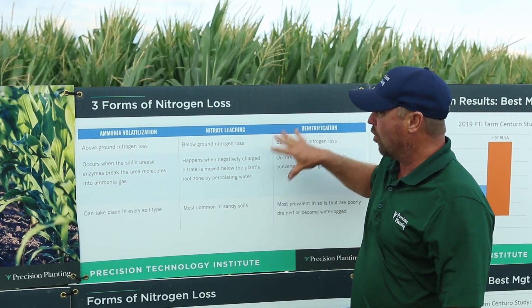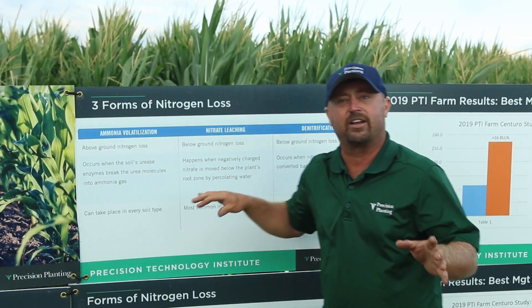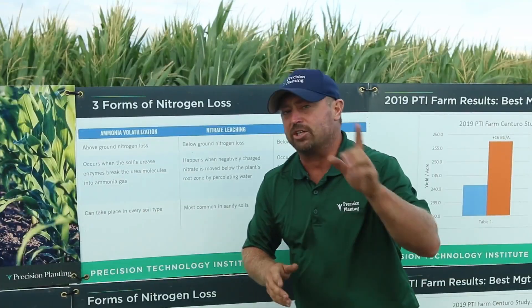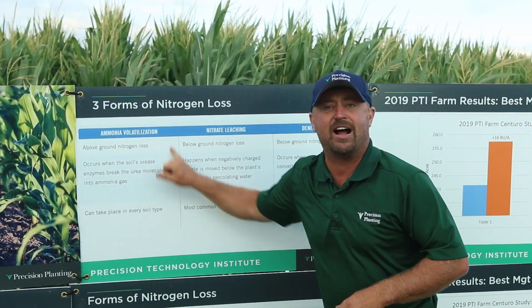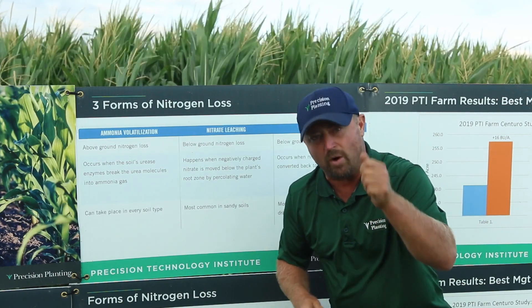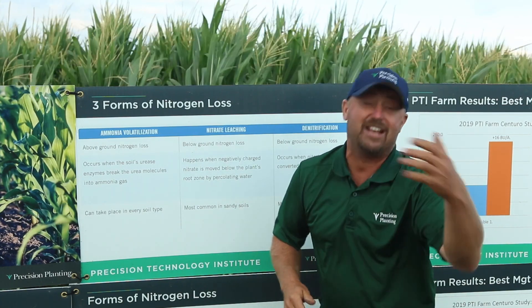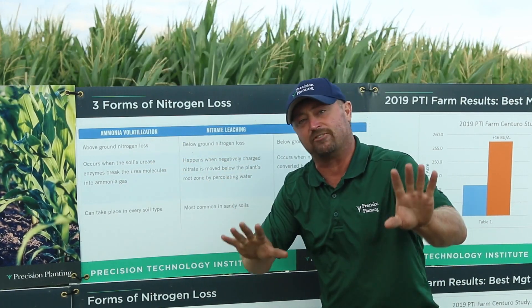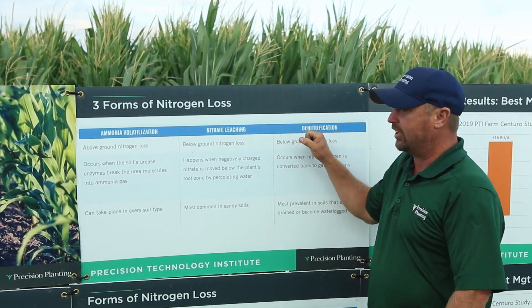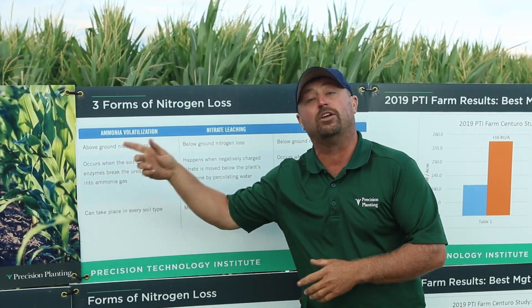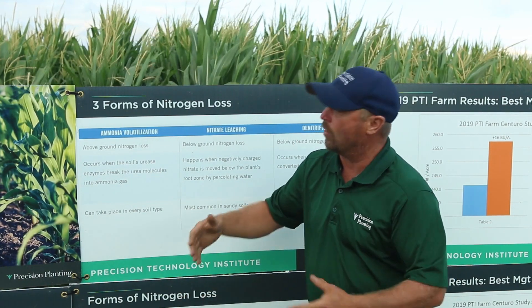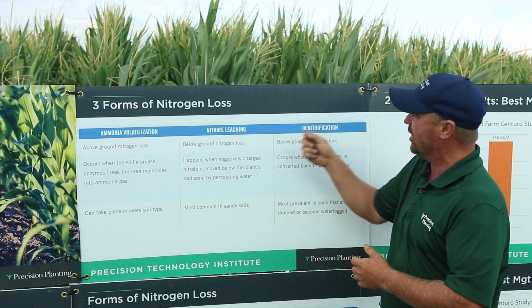These are the three major forms of nitrogen loss, and today we're looking at a product called Centuro from Cokag Industries. This product does not do anything with volatilization, and when you use a nitrogen stabilizer, you need to know what form of nitrogen loss it's going to protect you against. Centuro will cover the big ones — leaching and denitrification. Primarily, we want to use Centuro on farms that are typically wet with saturated soils, where we want to protect ourselves from leaching and denitrification.